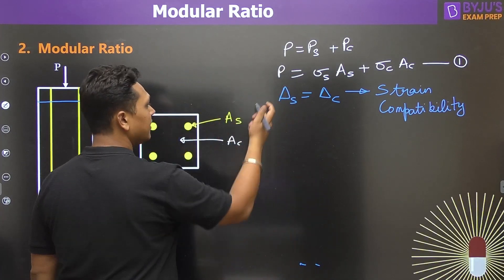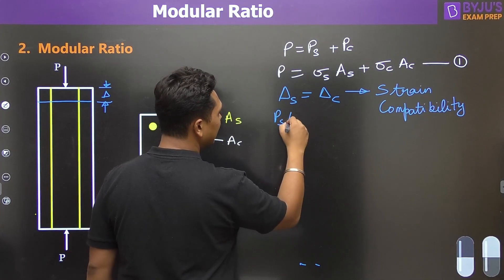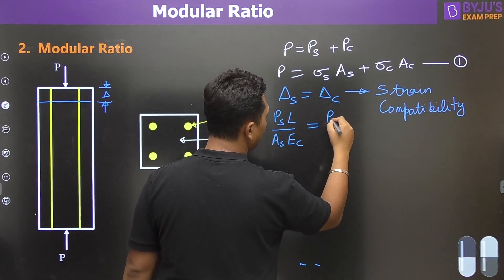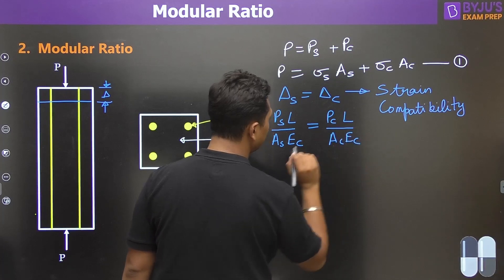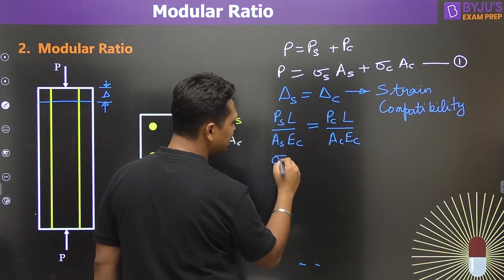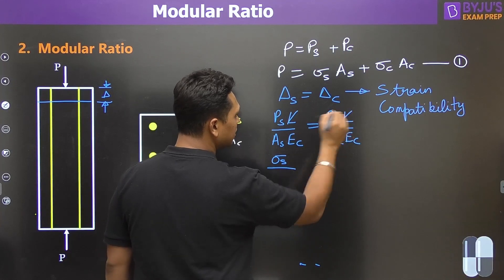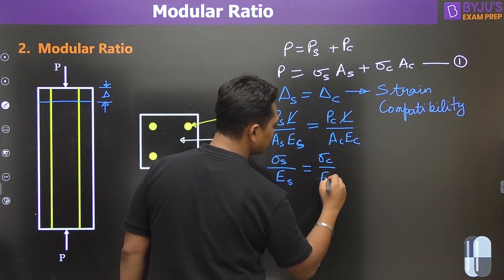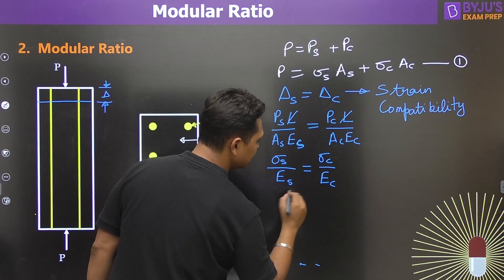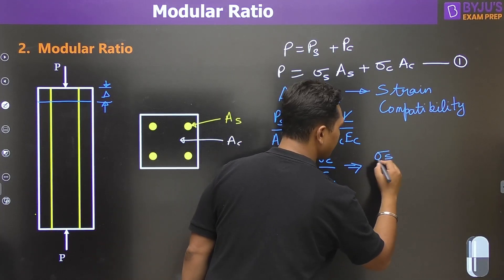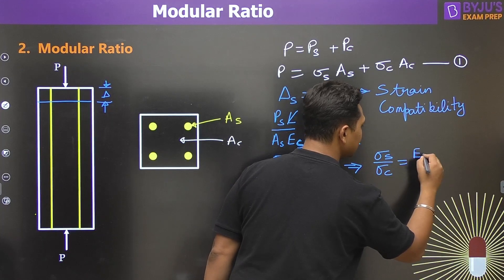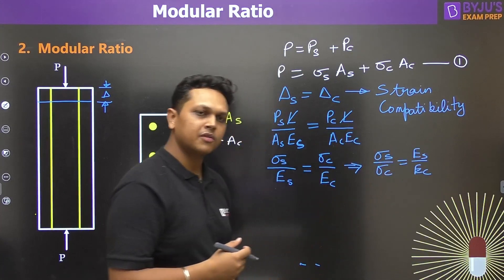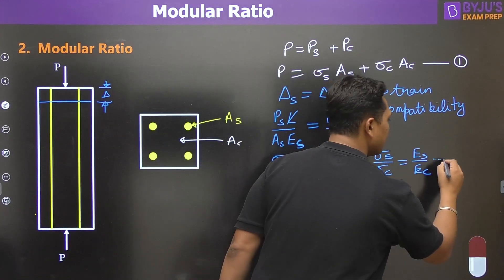Using the deflection formula PL/AE, since length is the same for both materials: (P_steel)/(A_steel × E_steel) = (P_concrete)/(A_concrete × E_concrete). Load divided by area is stress, and L cancels out, giving us σ_steel / E_steel = σ_concrete / E_concrete. Rearranging: σ_steel / σ_concrete = E_steel / E_concrete. This ratio of Young's modulus of steel to Young's modulus of concrete is defined as the modular ratio m in the working stress method.